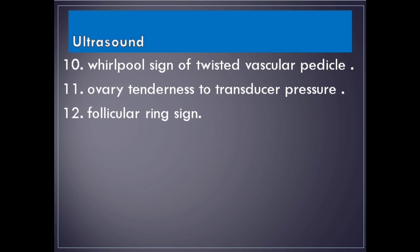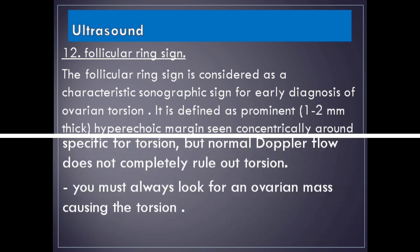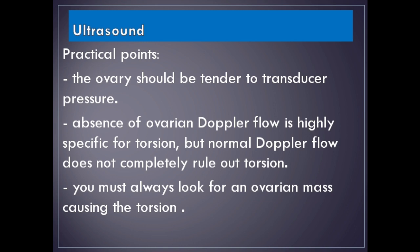Additional ultrasound signs include the whirlpool sign of the twisted vascular pedicle, ovarian tenderness to transducer pressure, and the follicular ring sign. The follicular ring sign is a characteristic sonographic sign for early diagnosis of ovarian torsion, defined as a prominent 1–2 mm thick hyperechoic margin seen concentrically around the antral follicles of the torsed ovary, which are usually small (3–7 mm) and peripherally displaced. Absence of ovarian Doppler flow is highly specific for torsion, but normal Doppler flow does not completely rule it out. Always look for an ovarian mass causing the torsion.